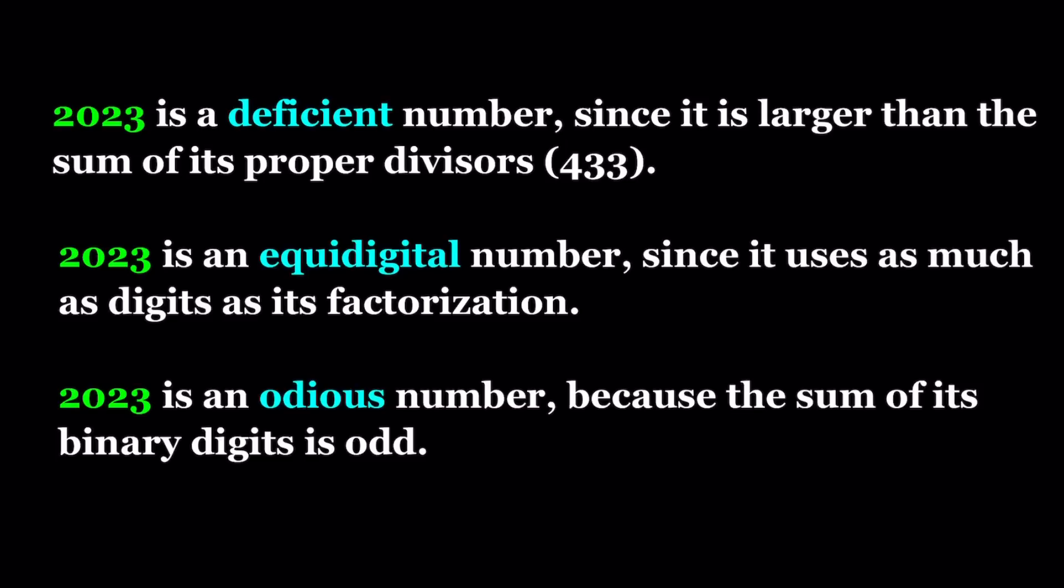2023 is also an equidigital number, which means it uses as many digits as its factorization. It's also an odious number because the sum of its binary digits is odd. When you write this number in binary and add up all the digits, you're going to get an odd number, which means you're going to have an odd number of ones.